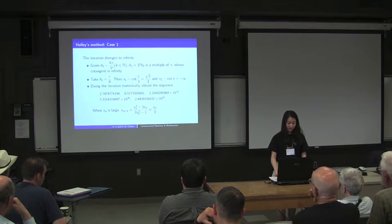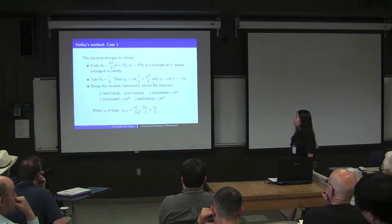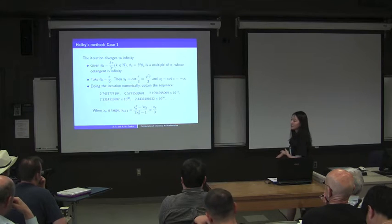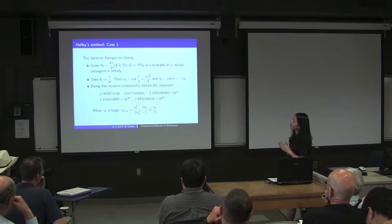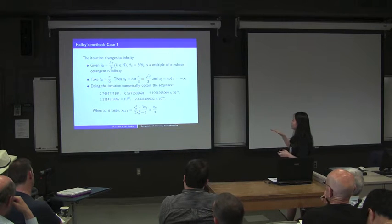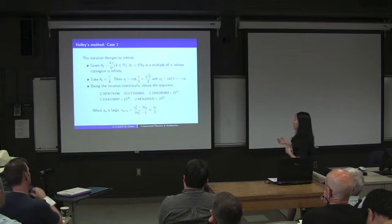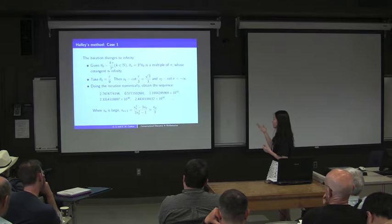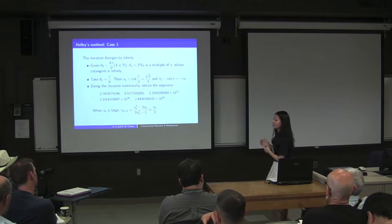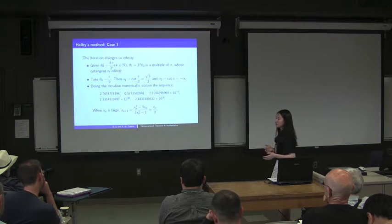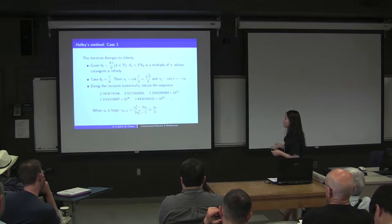With this formula we can analyze the asymptotic behavior. The first case is the iteration diverging to infinity: if the initial angle satisfies kπ over 3ⁿ, then θn is a multiple of π whose cotangent is infinity. A simple example is the initial angle π over 9, so x₂ equals cotangent of π, which is negative infinity. From the Maple results, due to round-off error, x₂ returns a very large positive number instead of negative infinity. After that, since the number is very large, the next step is approximately one-third of the previous one, and the iteration then decreases before being pushed back to something very large.